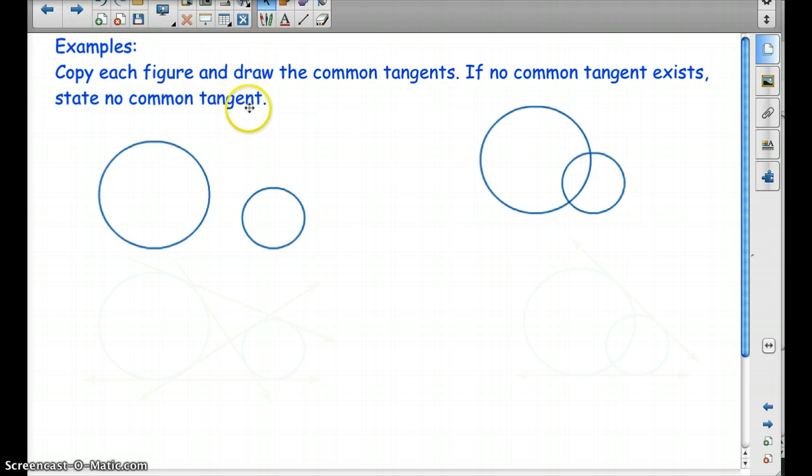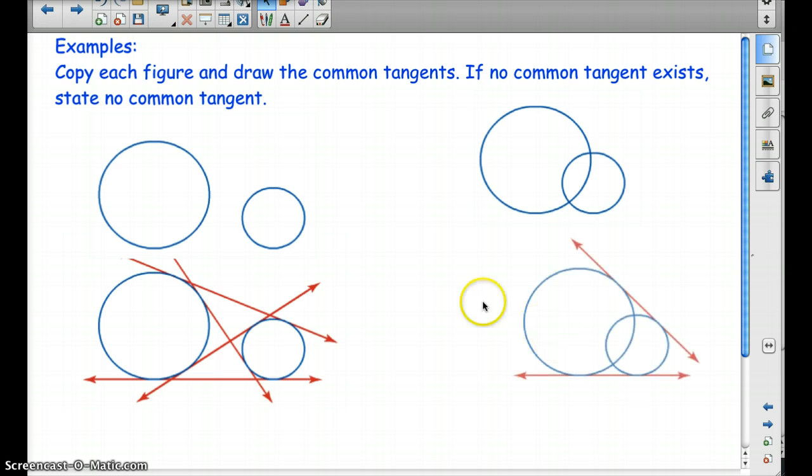Some examples. Copy each figure and draw the common tangents. If no common tangent exists, state no common tangent. So I want you to draw this in your notes and write down all the tangent lines. This is what you should have for the first one, these tangent lines here. You should have four. And the next one, you should only have two, since the circles intersect each other.